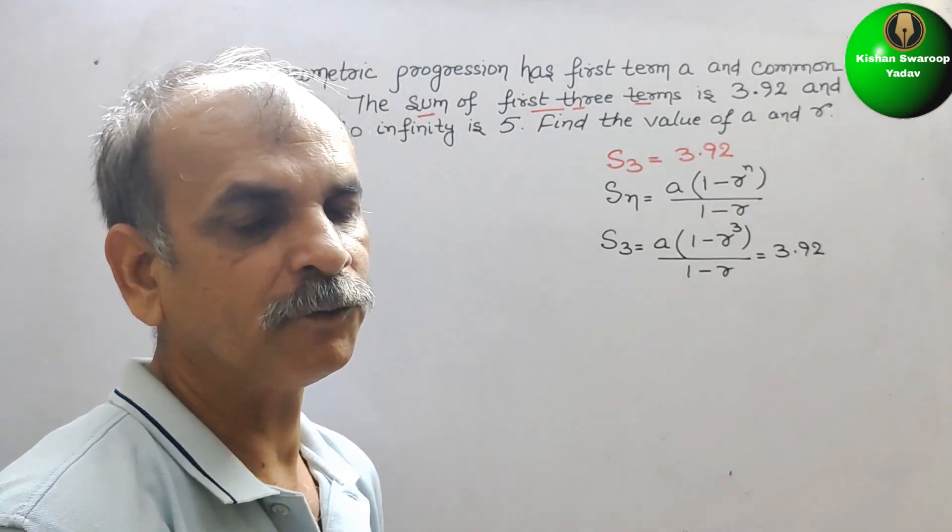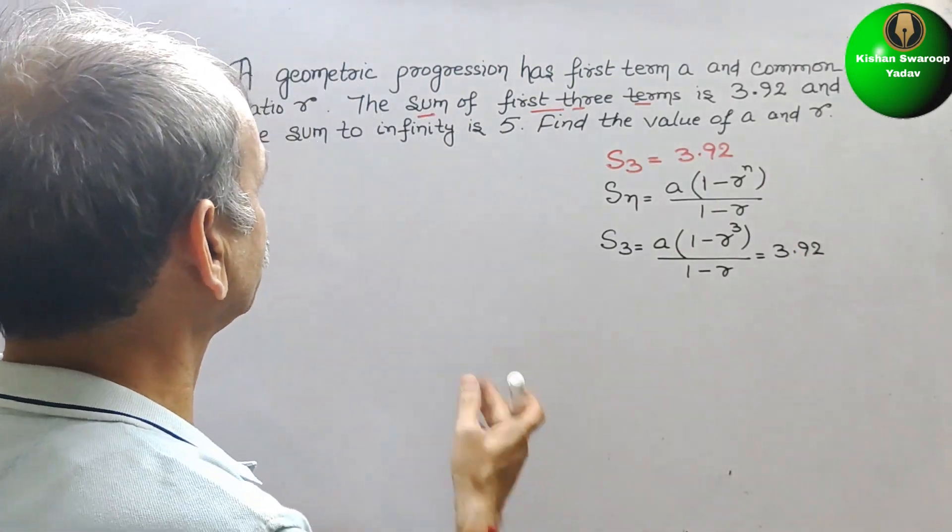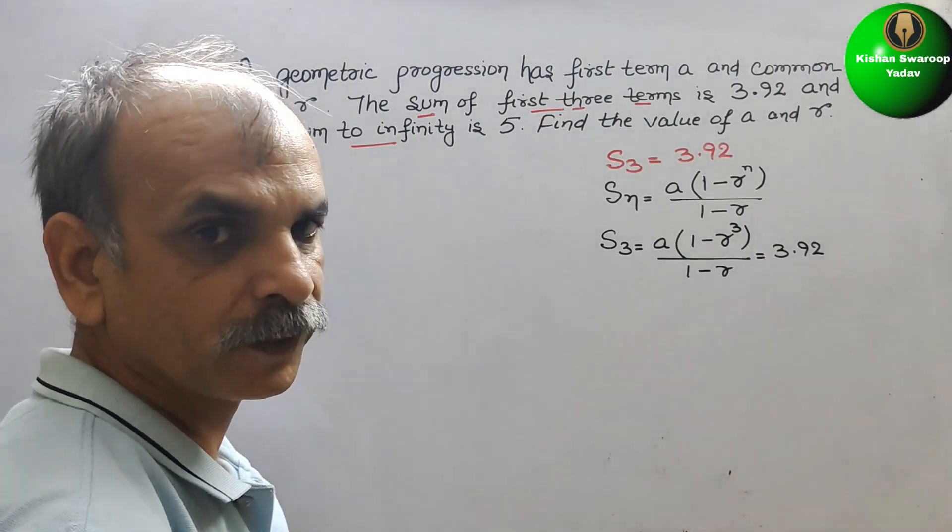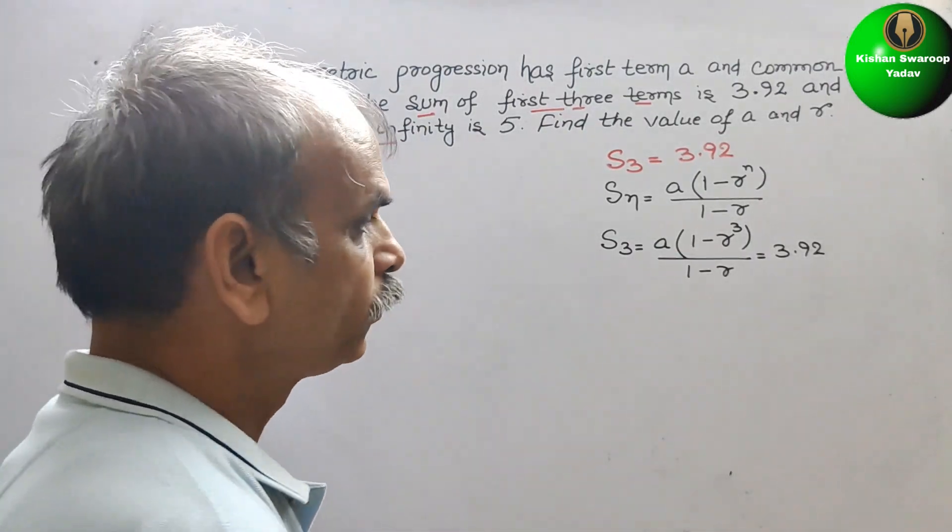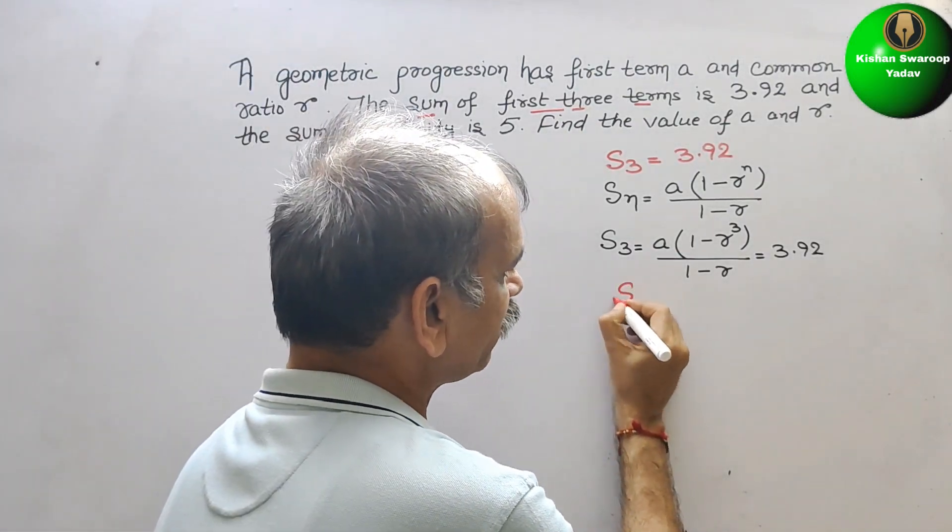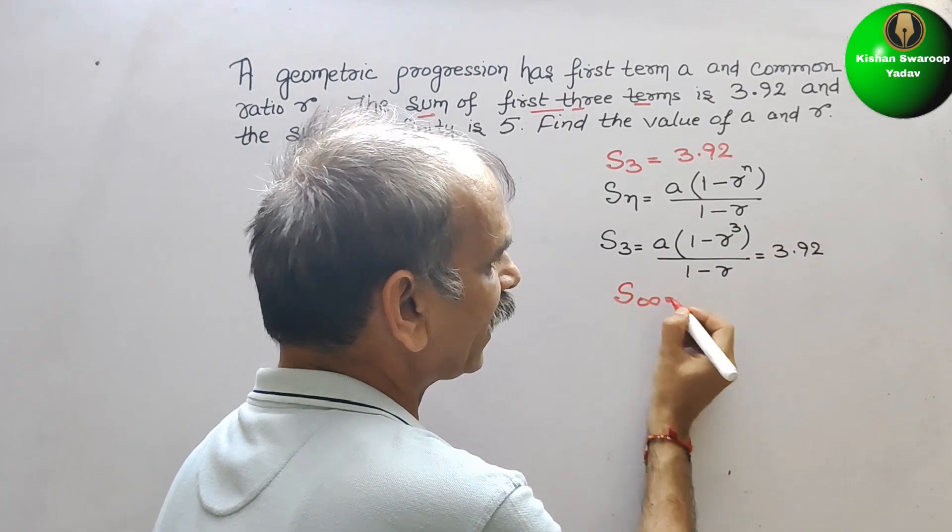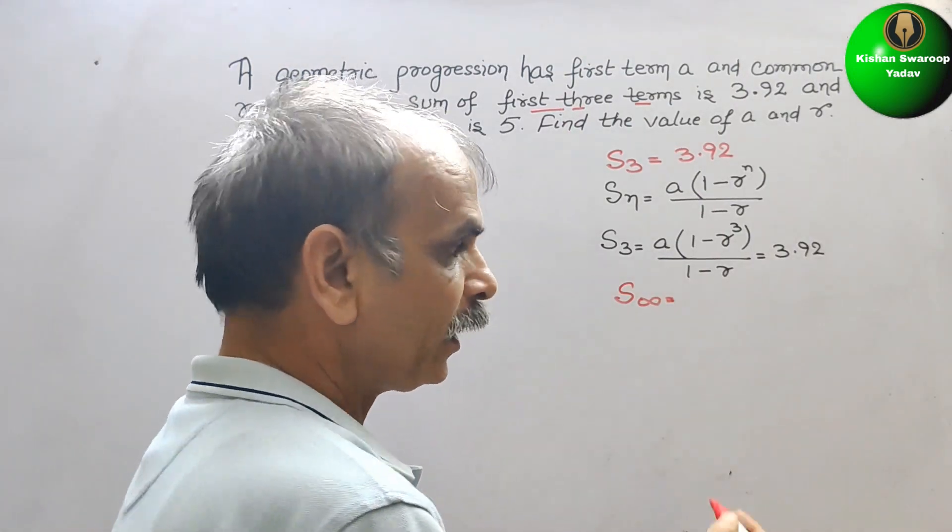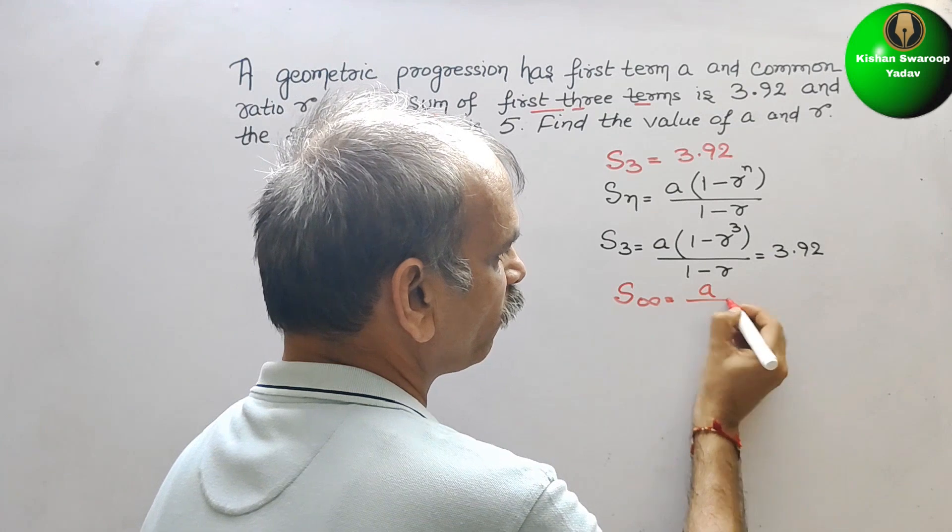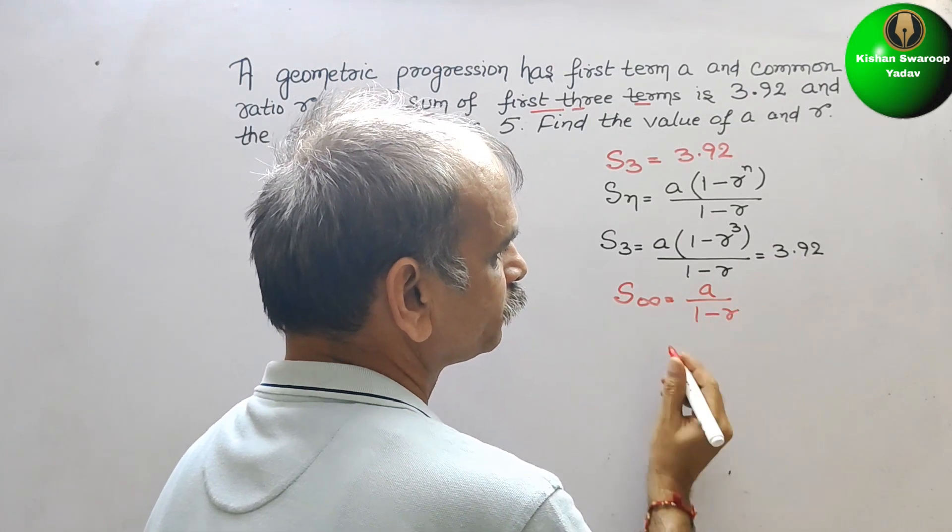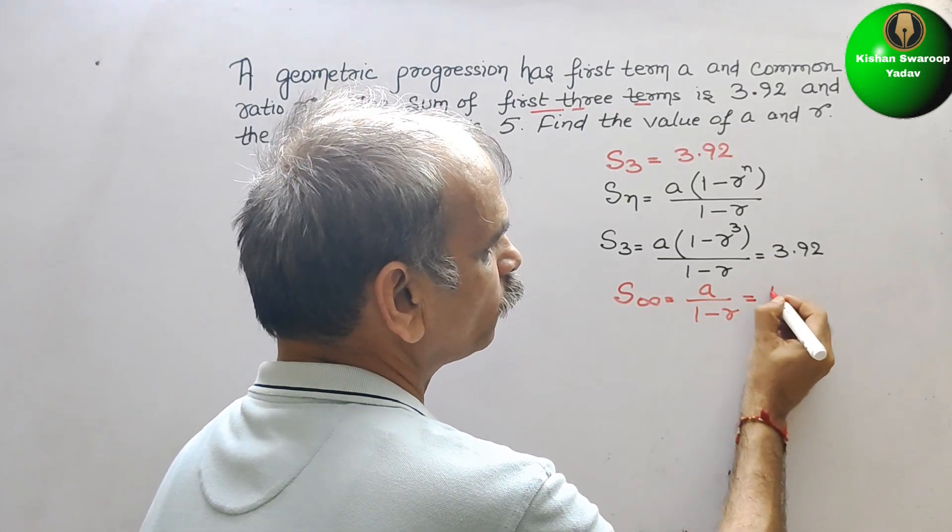Next, see what they have given. They have given that the sum to infinity is 5. That means S infinity. How we will write S infinity? A by 1 minus R. That is equal to 5.